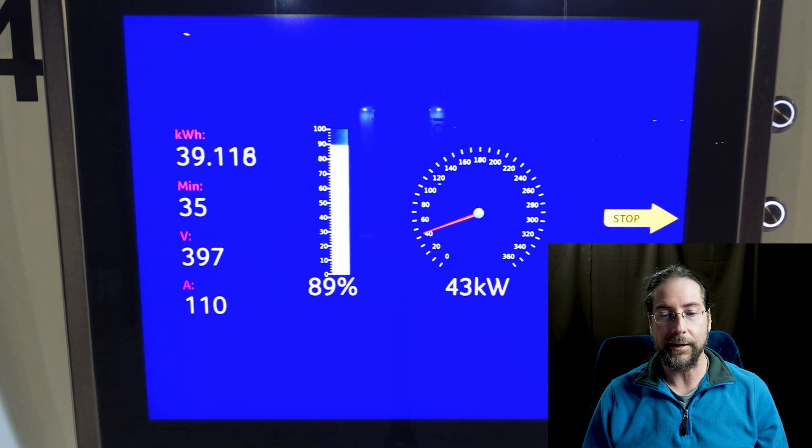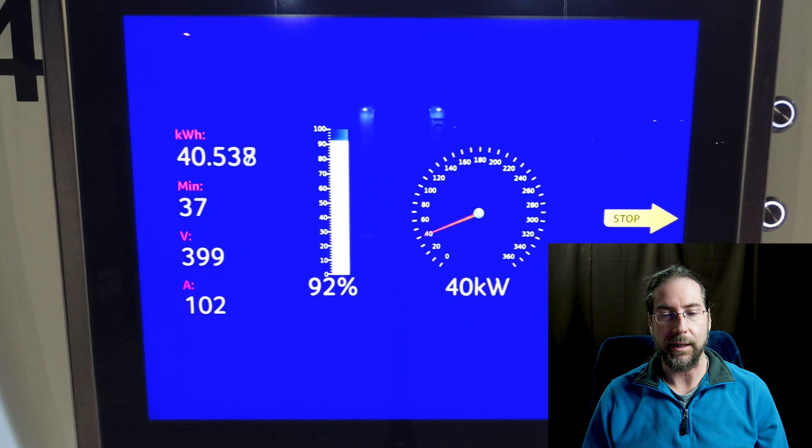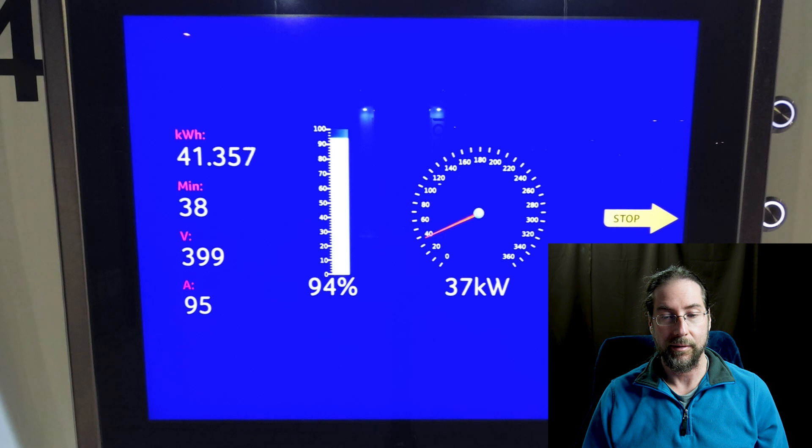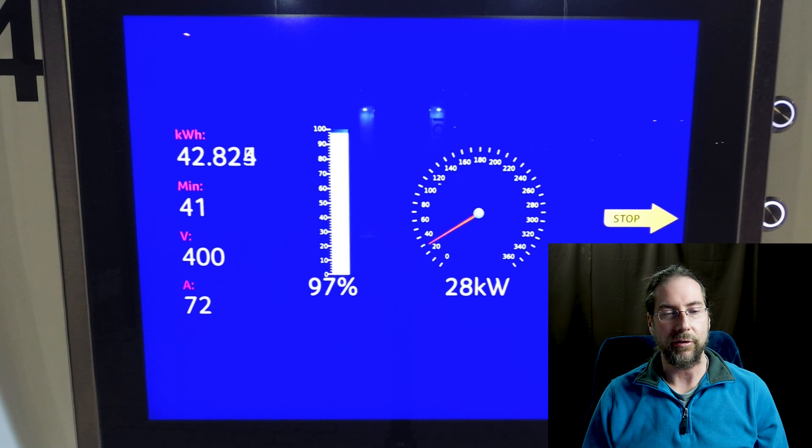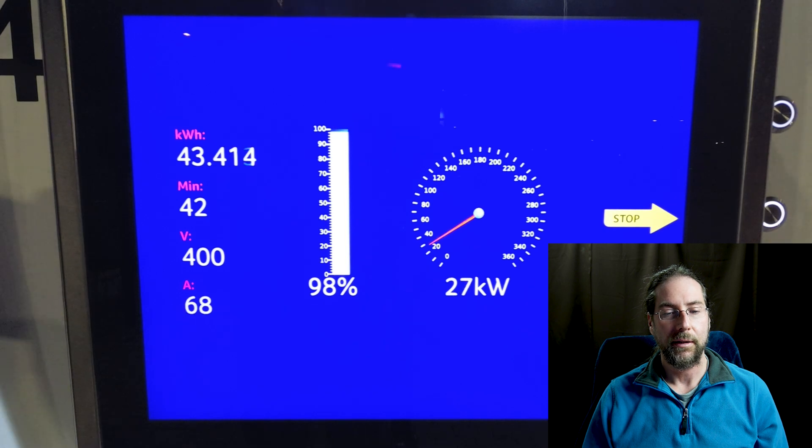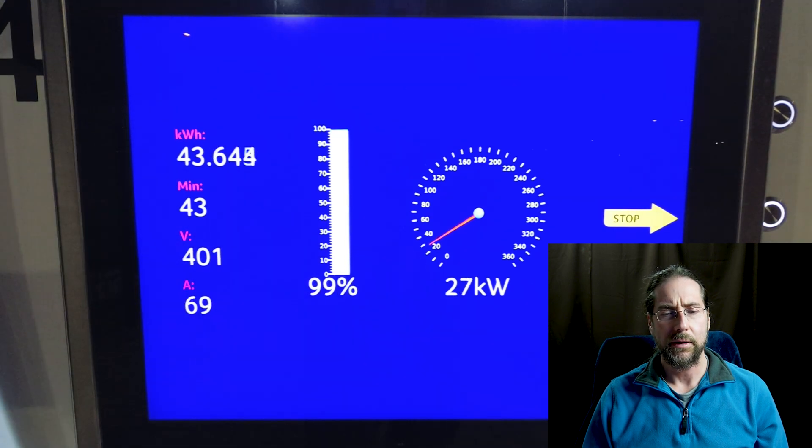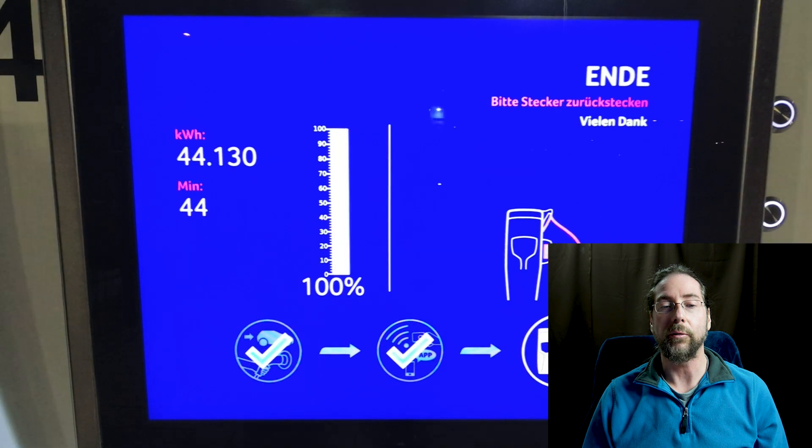Slowly going down, even at 90 percent, 43 kilowatt. That is awesome. Then it slowly goes down but even at 95 percent it's still good, 34-33 kilowatt at 95 percent. So you can charge this car really to a high state of charge, it's still fine. We are at 401 volt, and I charged 44.13 kilowatt hours.